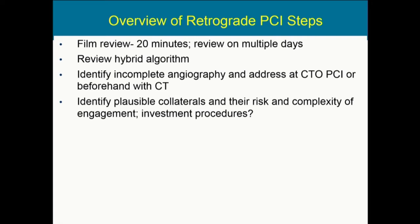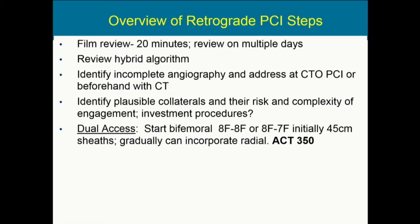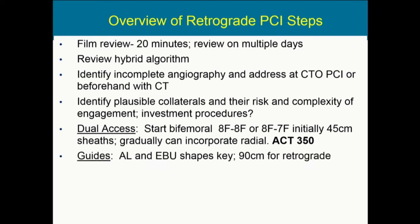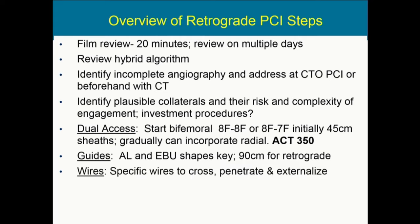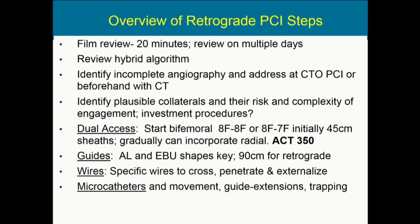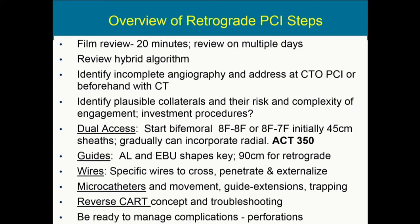Sometimes proximal disease can interfere with selection of septals. Dual access is the next approach; historically we have started with 8 French bilateral bifemoral sheaths, but 7 French sheaths are becoming more common, and radial access is also starting to take a greater role as one gets more experience. ACTs are critical to be maintained at a high anticoagulation rate — donor vessel injury can be life-threatening, so high ACTs of 350 or higher are recommended. Strong supportive guides with AL and EB shapes are key, and a 90-centimeter shortened guide is necessary for retrograde approaches. There are specific wires to cross, penetrate, and externalize. Understanding microcatheter movement, guide extensions, how to trap, reverse CART concepts, and being ready to manage complications and perforations are all vital.